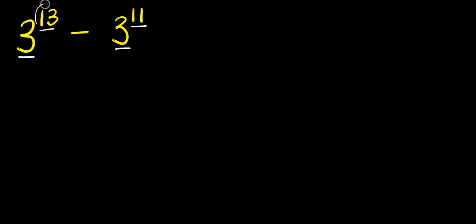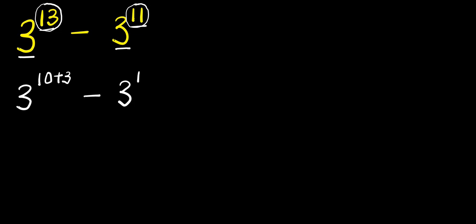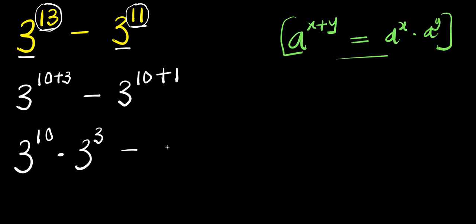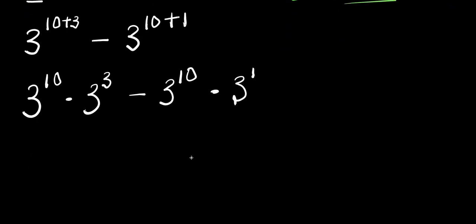I'm going to start by expressing 13 as a summation of 10 and 3, and also express 11 as a summation of 10 and 1. So this will give me 3 to the power (10+3) minus 3 to the power (10+1). Now, if you have a^(x+y) this equals a^x times a^y, so I'll apply that here to get 3^10 times 3^3 minus 3^10 times 3^1.